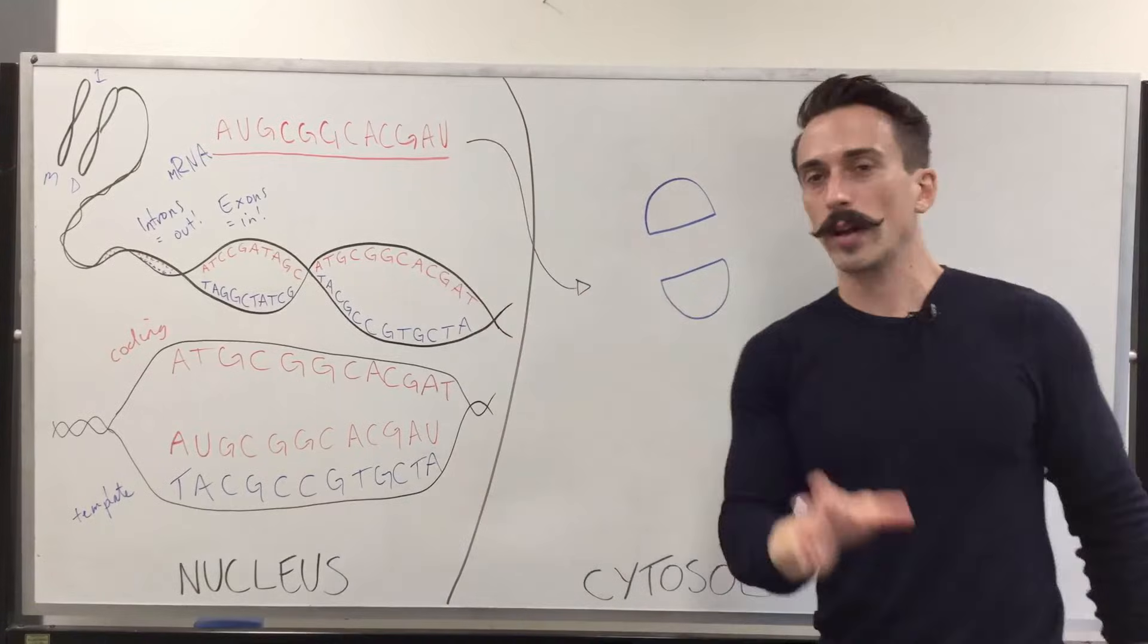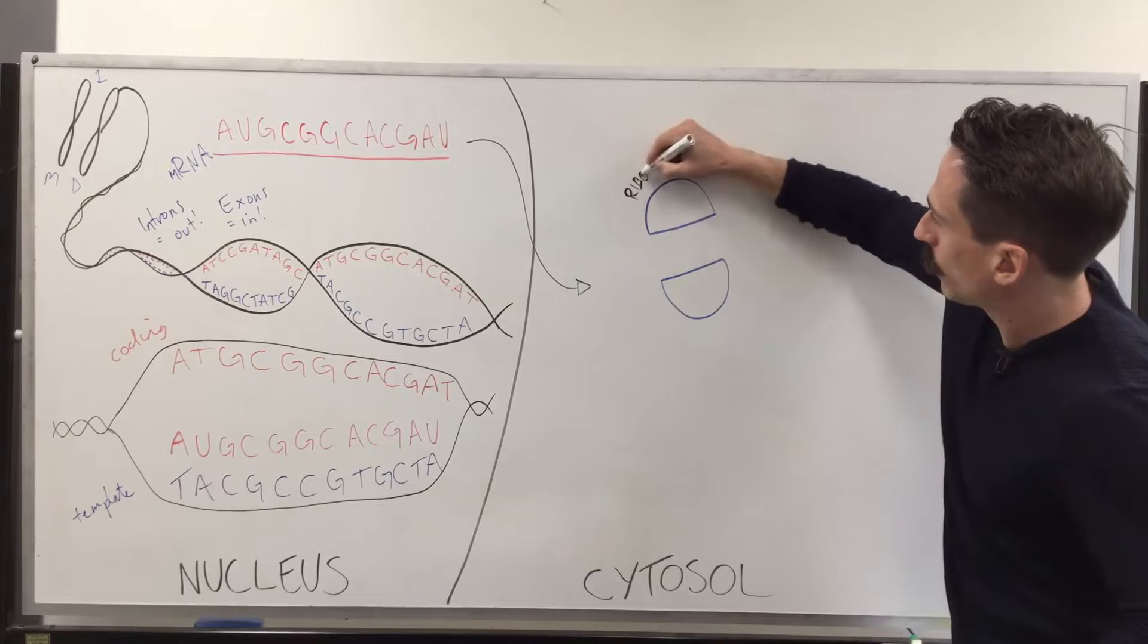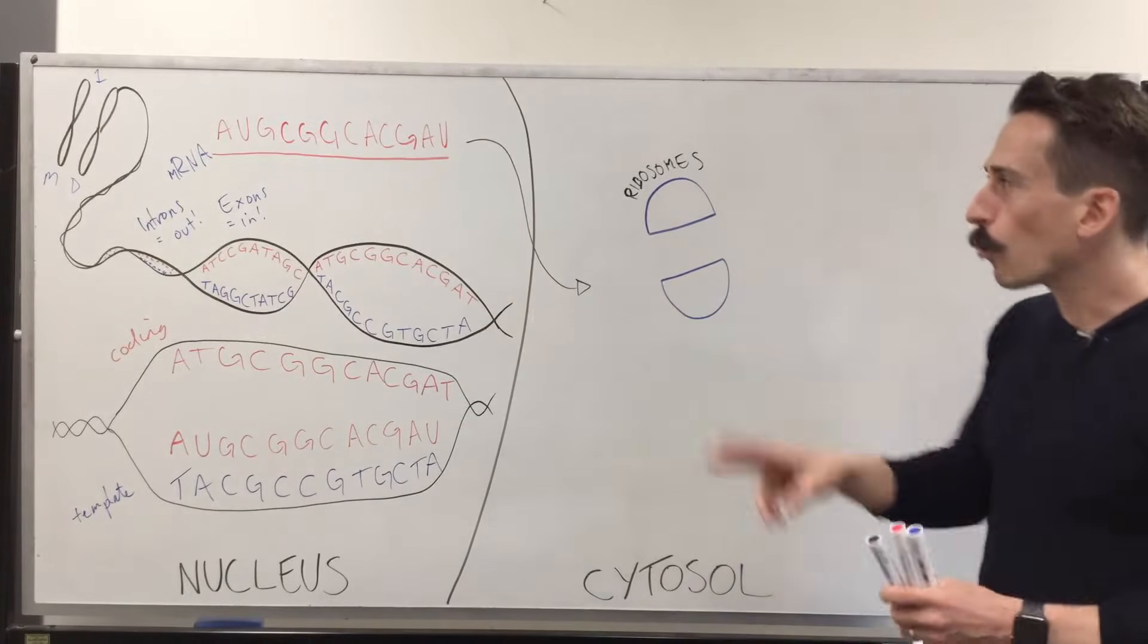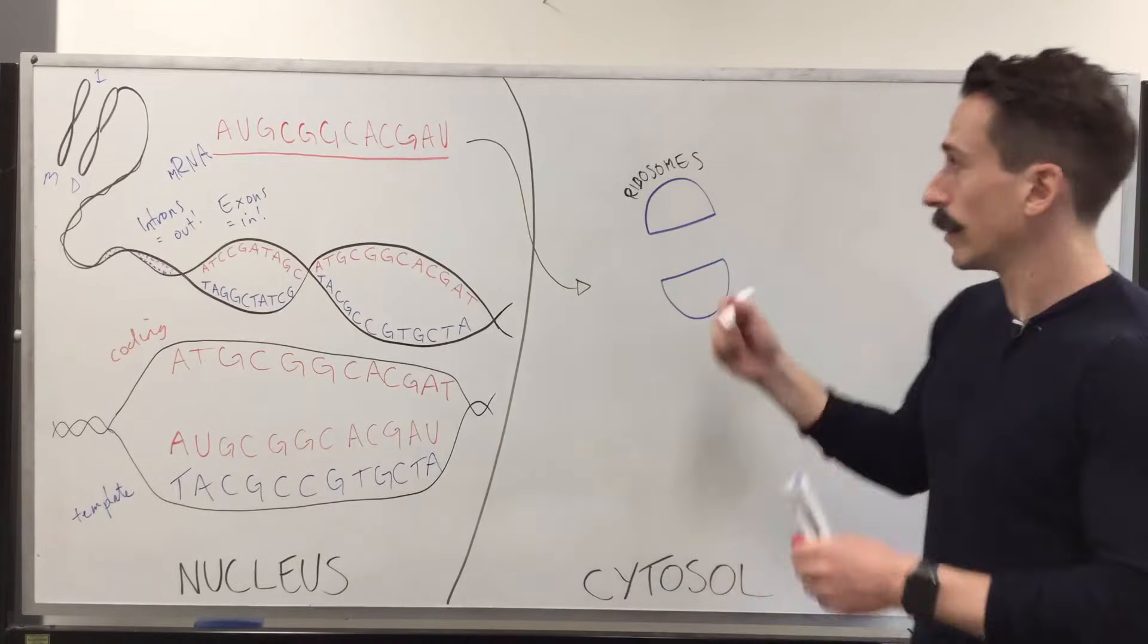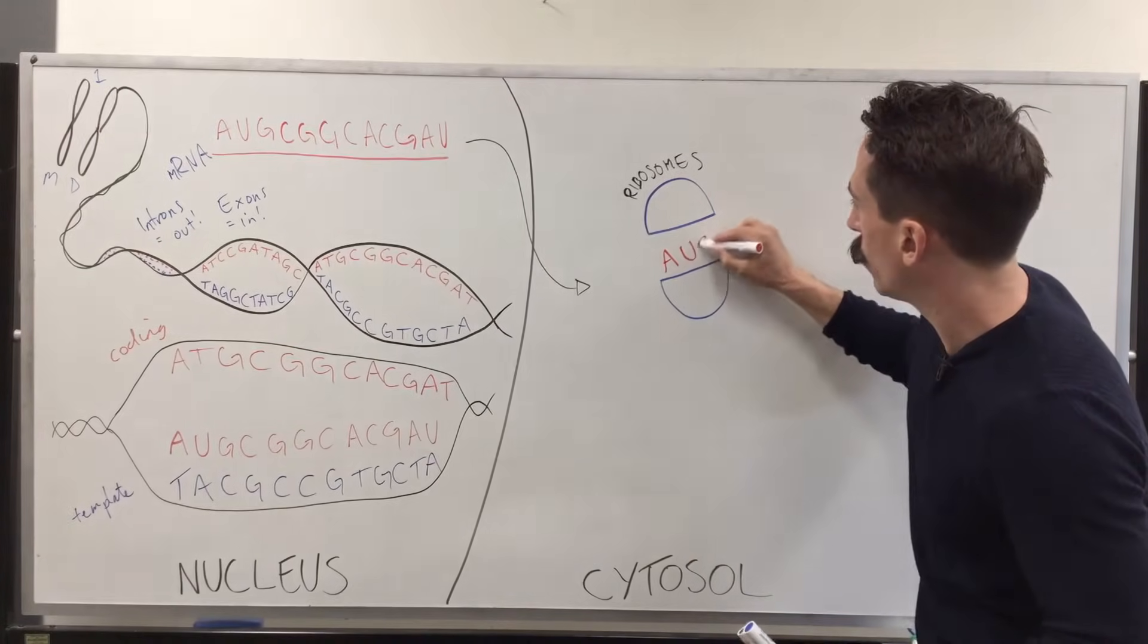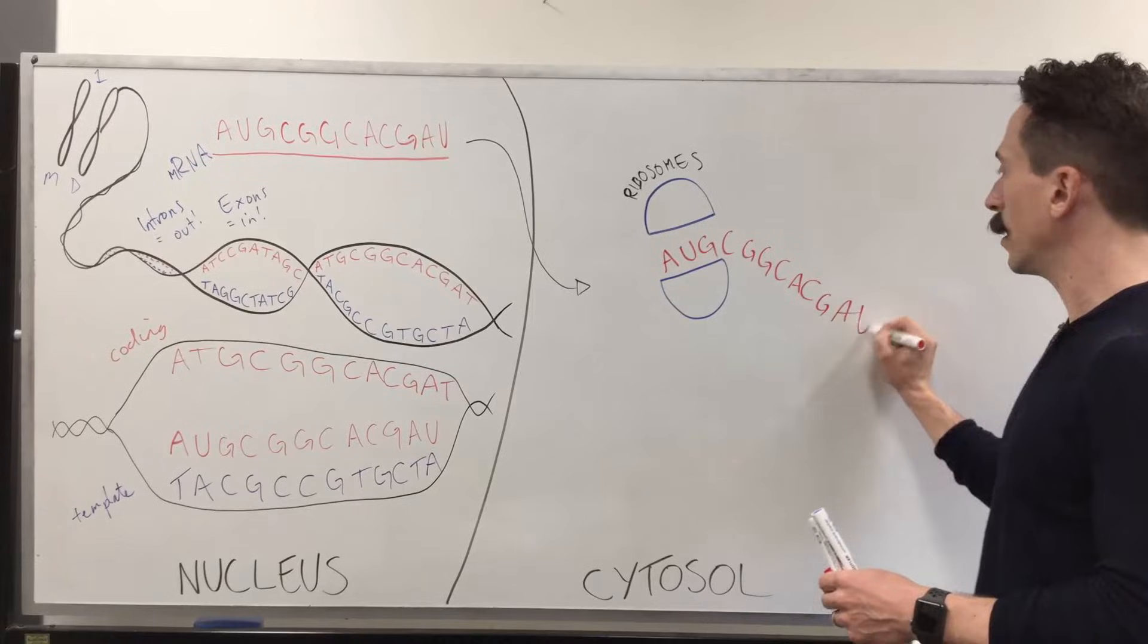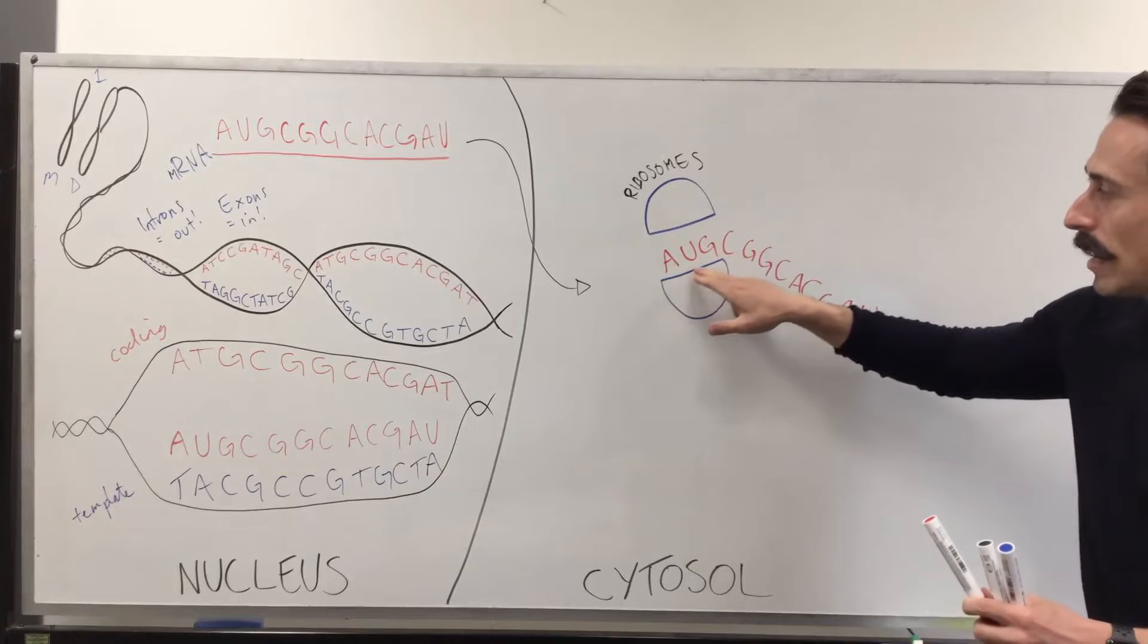Once in the cytosol, the mRNA transcript will find something called a ribosome. All various ribosomes. And what the ribosome does is it feeds the mRNA transcript through and it will read three nucleotides at a time. So, let's have a look. Let's feed it through. We've got A, U, G and then the rest C, G, G, C, A, C, G, A, U. So, there's this strand being fed through and this ribosome is read A, U, G.